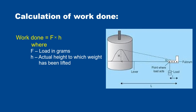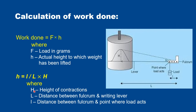For both the procedures, work done can be calculated. The formula for work done is W = F × H, where F is load in grams and H is actual height to which weight has been lifted. To calculate H, the formula is: small h = (small l / capital L) × capital H, where capital H is height of contraction — the amplitude of contraction you can see on the drum. Capital L is the distance between fulcrum and writing lever. Small l is the distance between fulcrum and the point where load acts. Using this formula, we can calculate work done in both conditions.